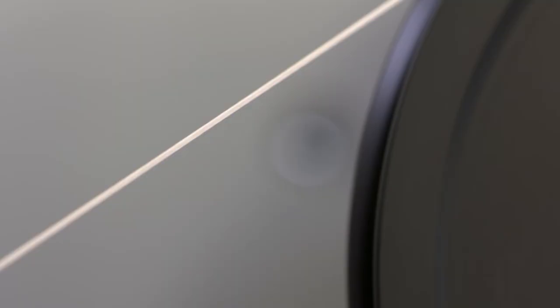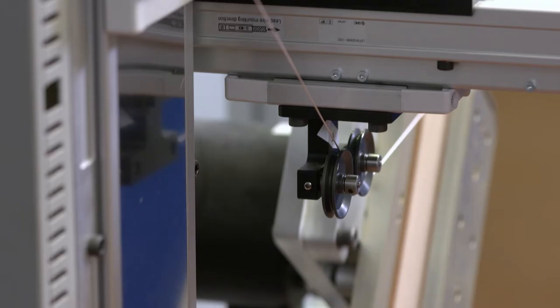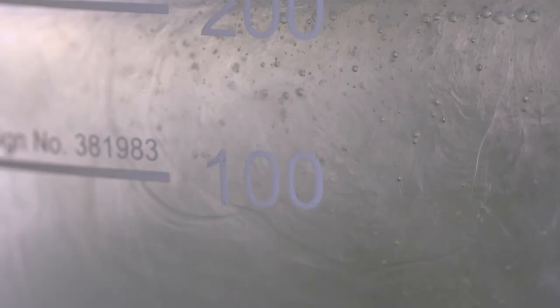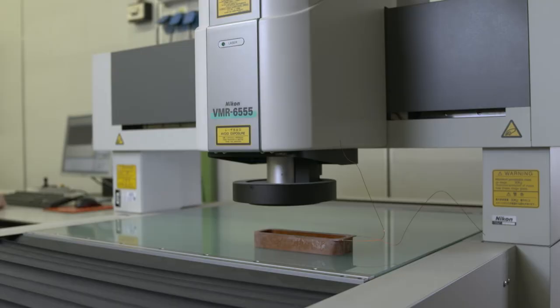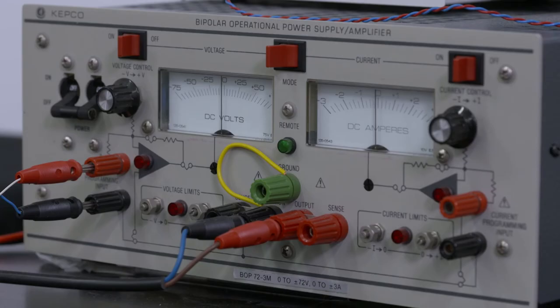Coils are produced by precisely winding the superconductive wire around the supporting structure, which is then impregnated under vacuum with a suitable resin. Finished coils are then metrologically inspected and electrically tested.